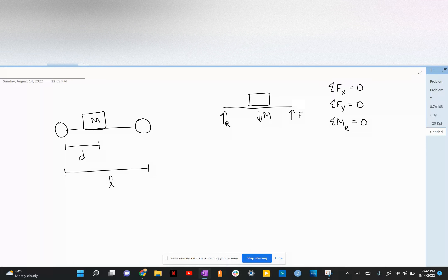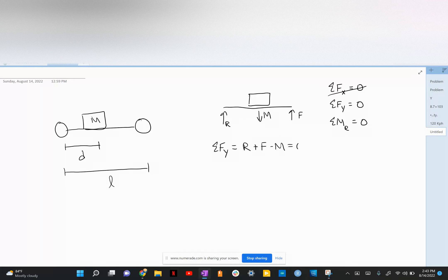For the x-axis, we can ignore this because there are no forces in the x-direction. For the y-axis, sum of the forces Y is equal to R plus F minus M equals zero.